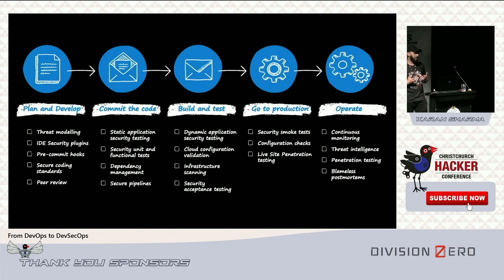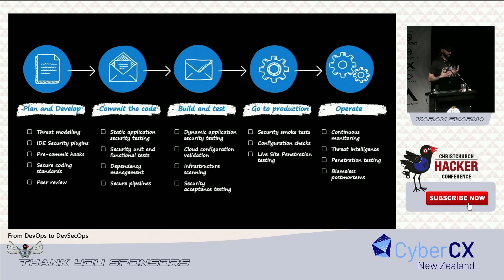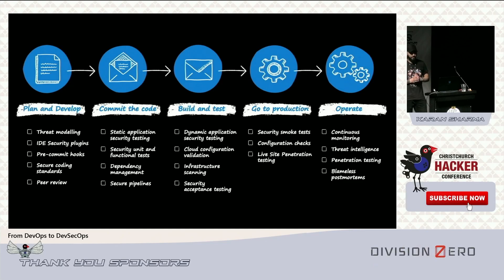We can kick off with threat modeling to identify security issues at the high-level design stage. We can also ask developers to use IDE plugins to find security issues right in their terminals while typing code. When an artifact is deployed — whether a web app or API — we can run DAST (dynamic application security testing) to find vulnerabilities. That's DevSecOps in a nutshell.